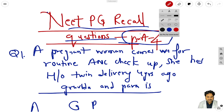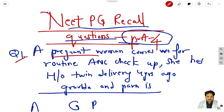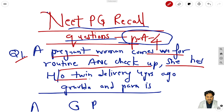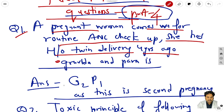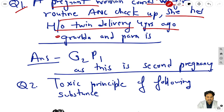The first question: a pregnant woman comes for routine ANC checkup, she has history of twin delivery four years ago. The question is: what is gravida and para? So the gravida is 2 and para is 1, as this is the second pregnancy. Remember this: gravida is 2 and para is 1.